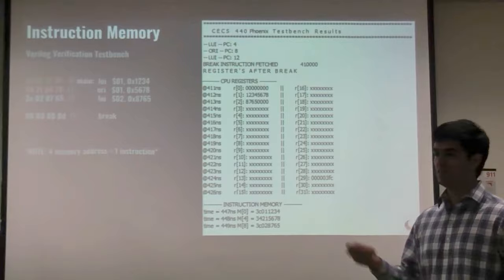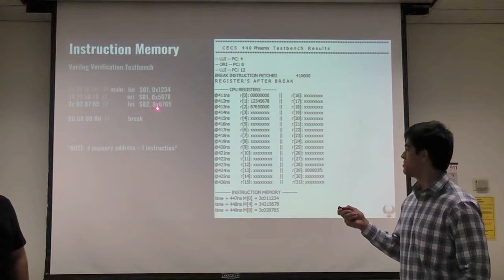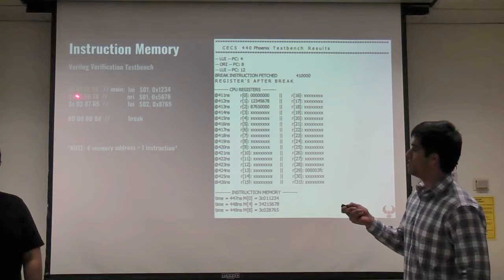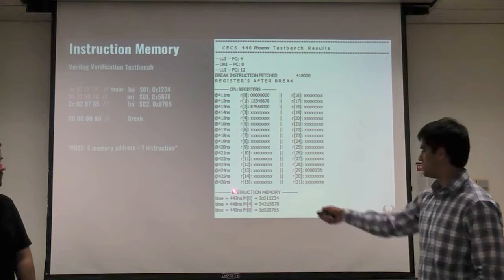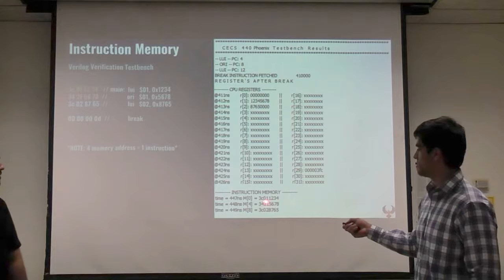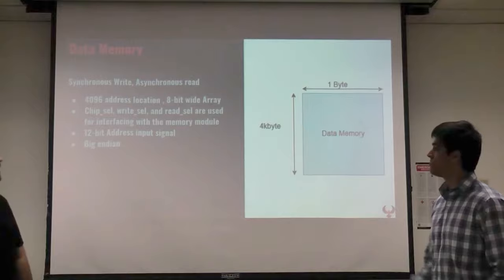Here's a Verilog verification test bench of the instruction memory using LUI for registers 0 to 2. We're looking at the instruction data to see if it's actually being stored in Big Endian format. You can see that 3C01234 is correlated to memory address 01, which means it's being stored properly.